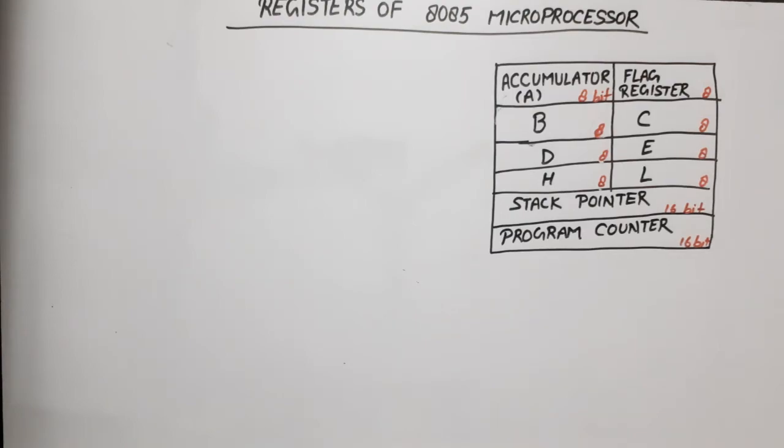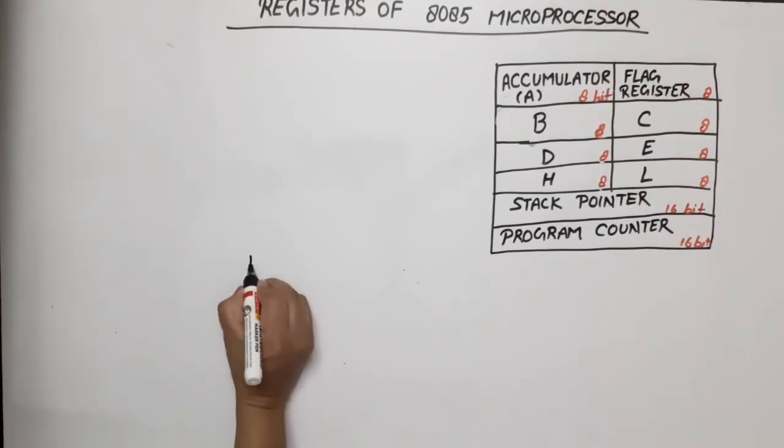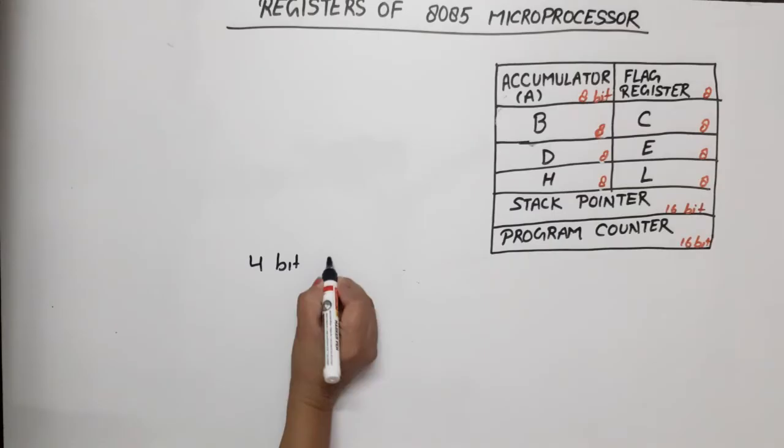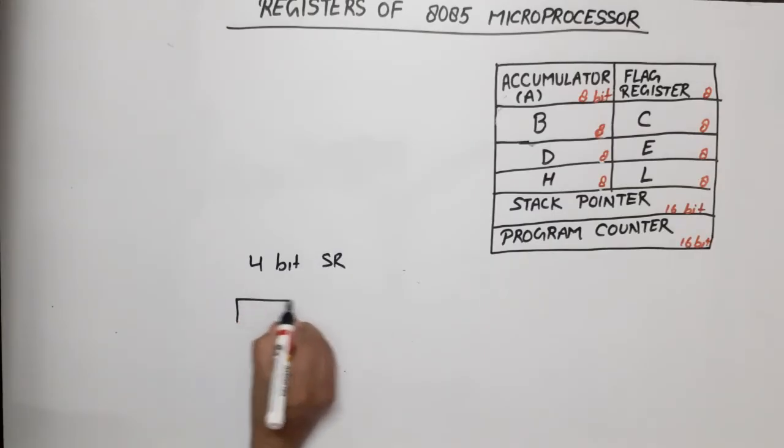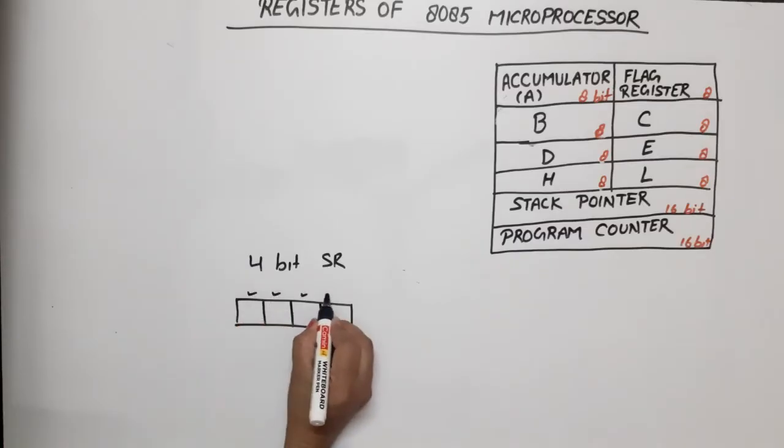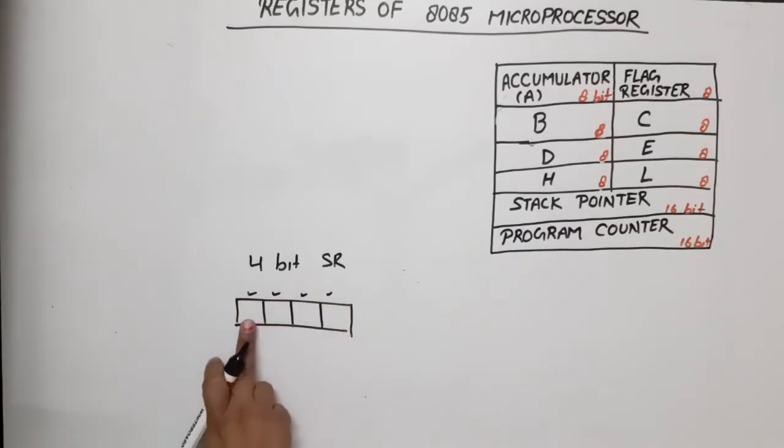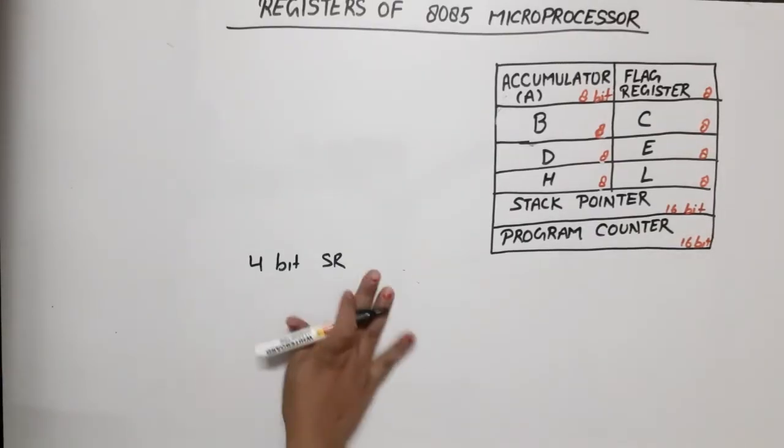An n-bit register means that n flip-flops are required, or it can store n bits. For example, if we have a 4-bit shift register, there will be 4 flip-flops: one, two, three, four. As many bits in the shift register, that many flip-flops are required because a flip-flop is a one-bit storage device.